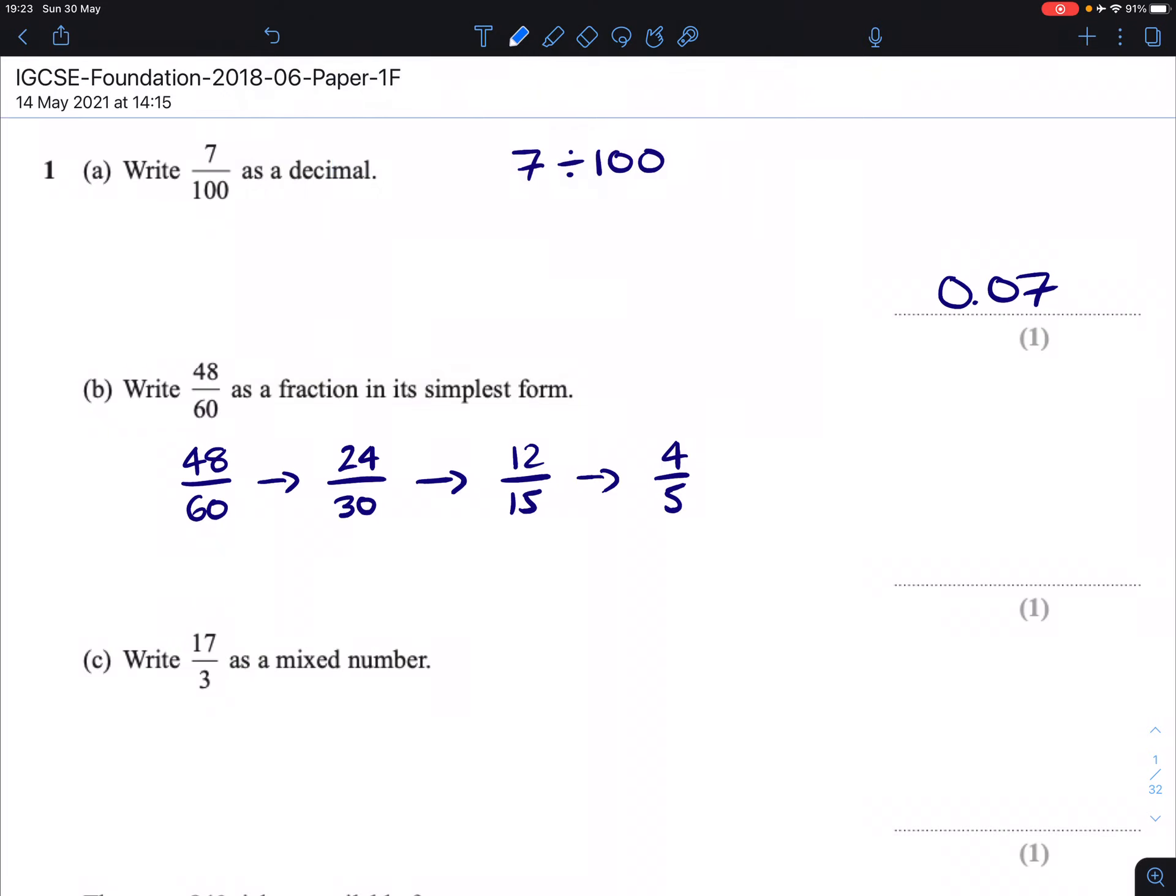So just to clarify there, dividing both by 2, dividing both by 2, and dividing both by 3. It doesn't matter how many steps you take, you should end up with the same answer in the end. So 4 fifths is that fraction fully simplified.